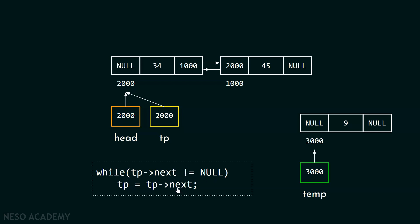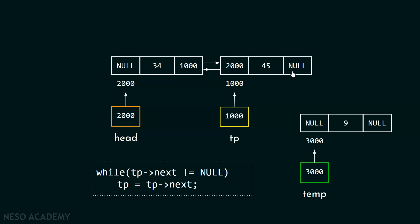This is very simple. We are checking the condition: tp->next not equal to null. When tp->next becomes null, we will stop our pointer. Right now, tp->next is not null, so we move our pointer to the right. After that, we check tp->next is null, and we get outside of the while loop. Now tp is pointing to the last node.